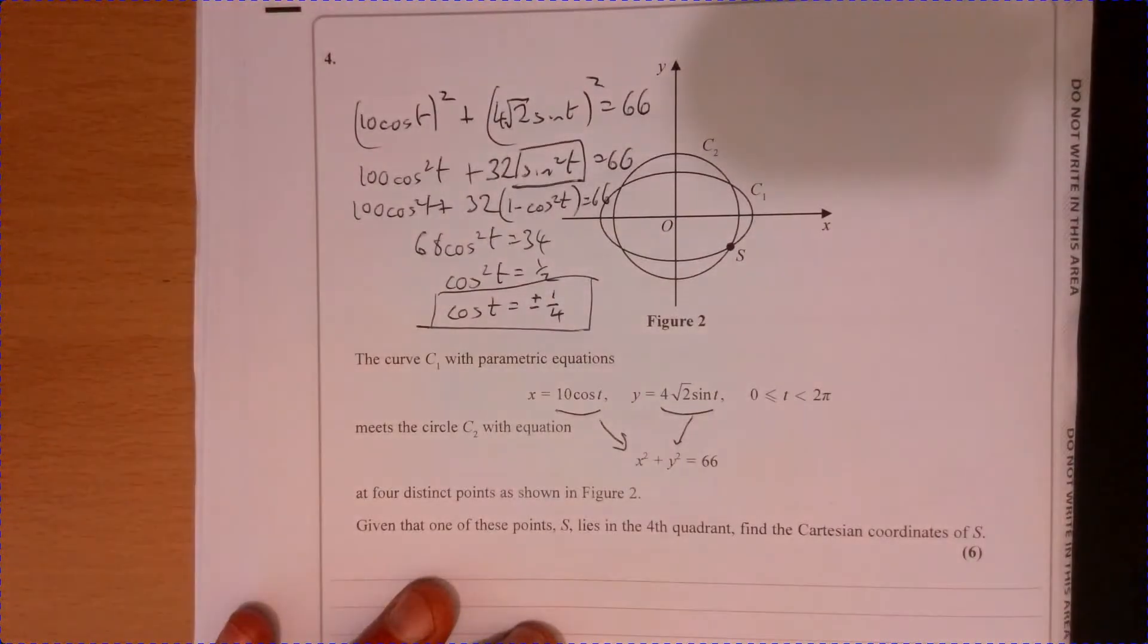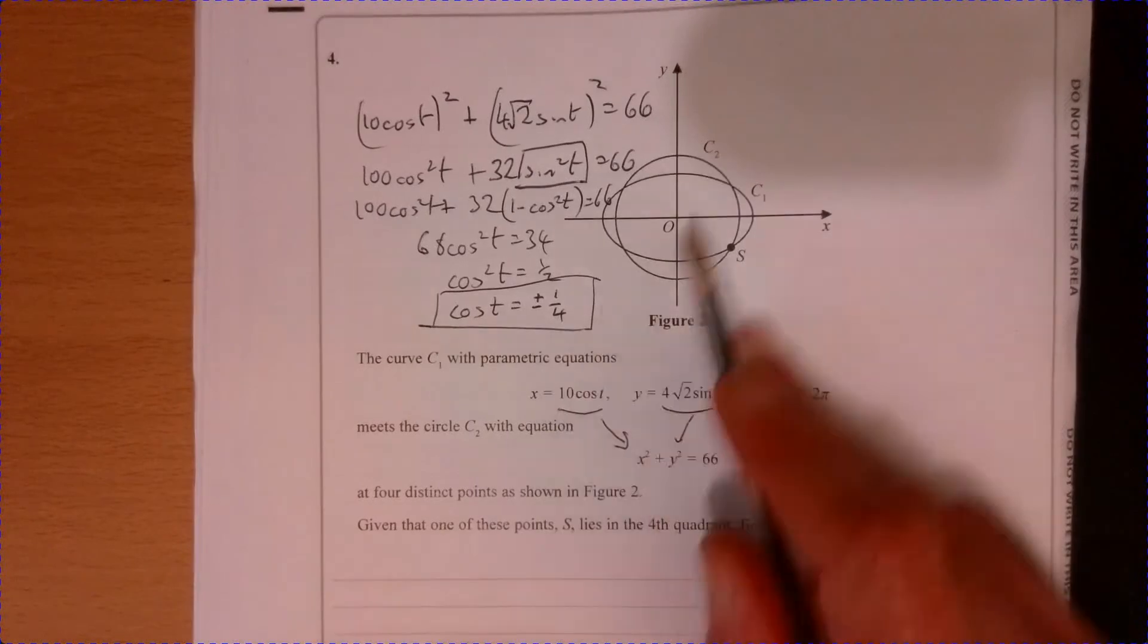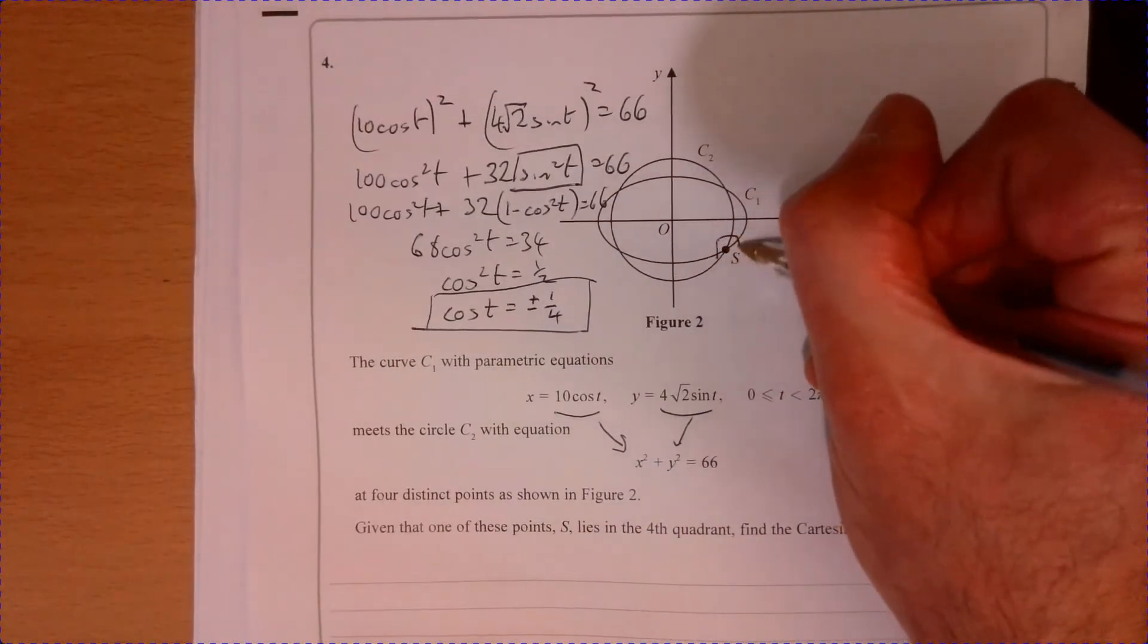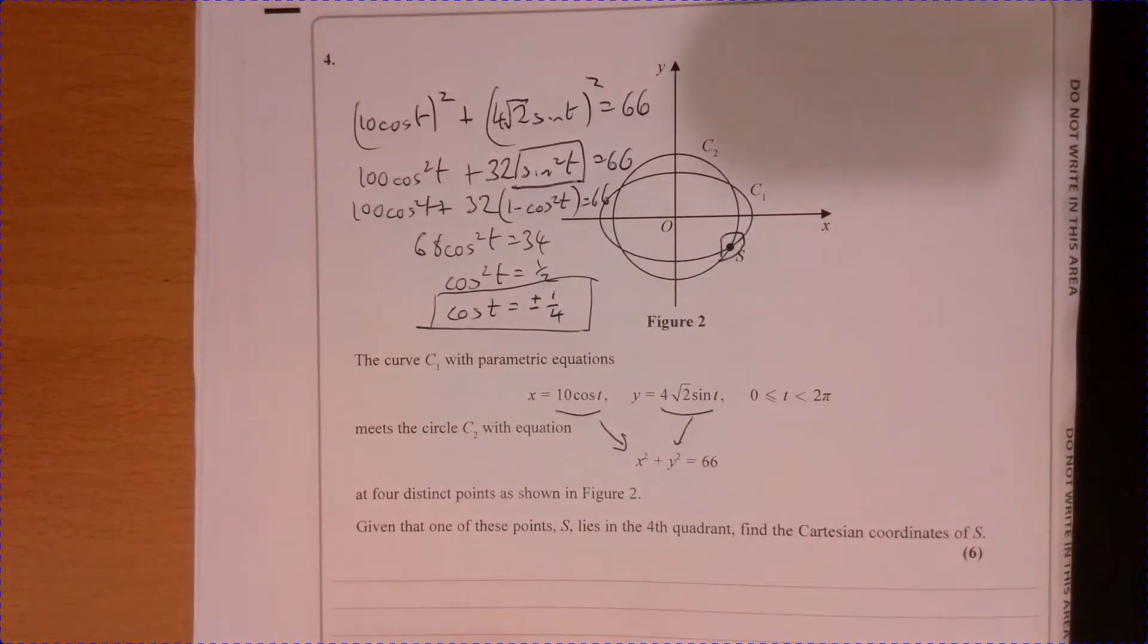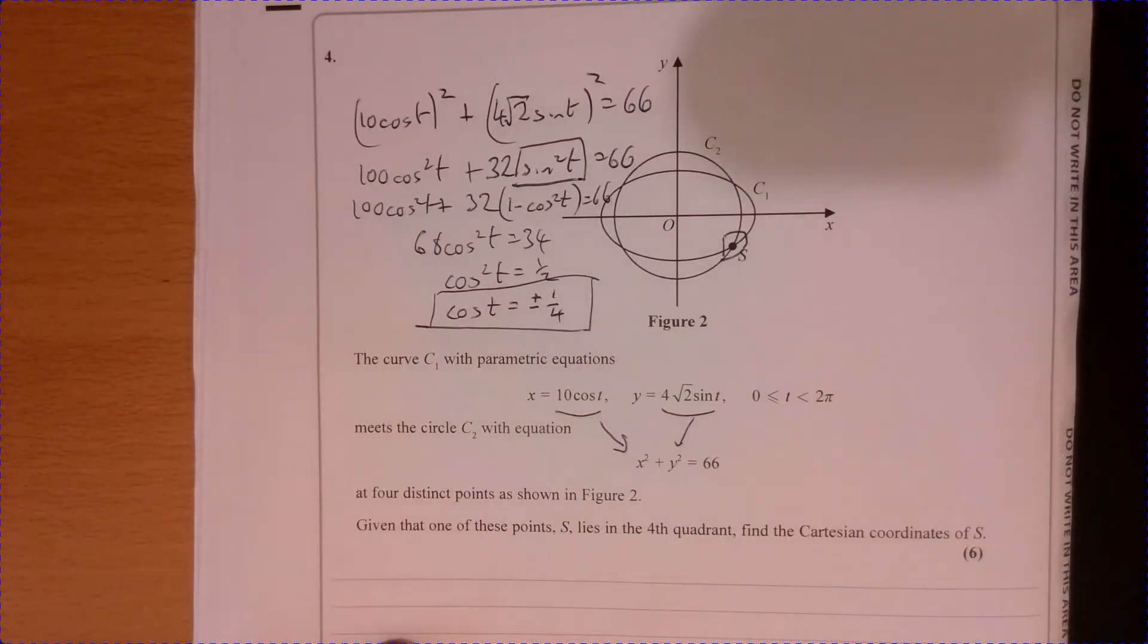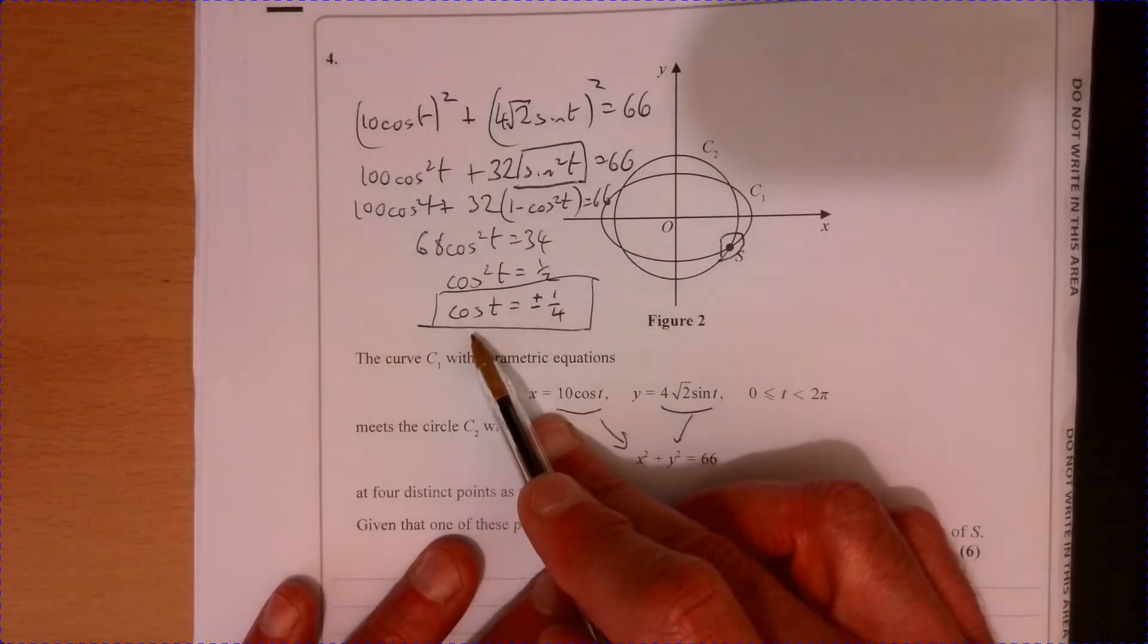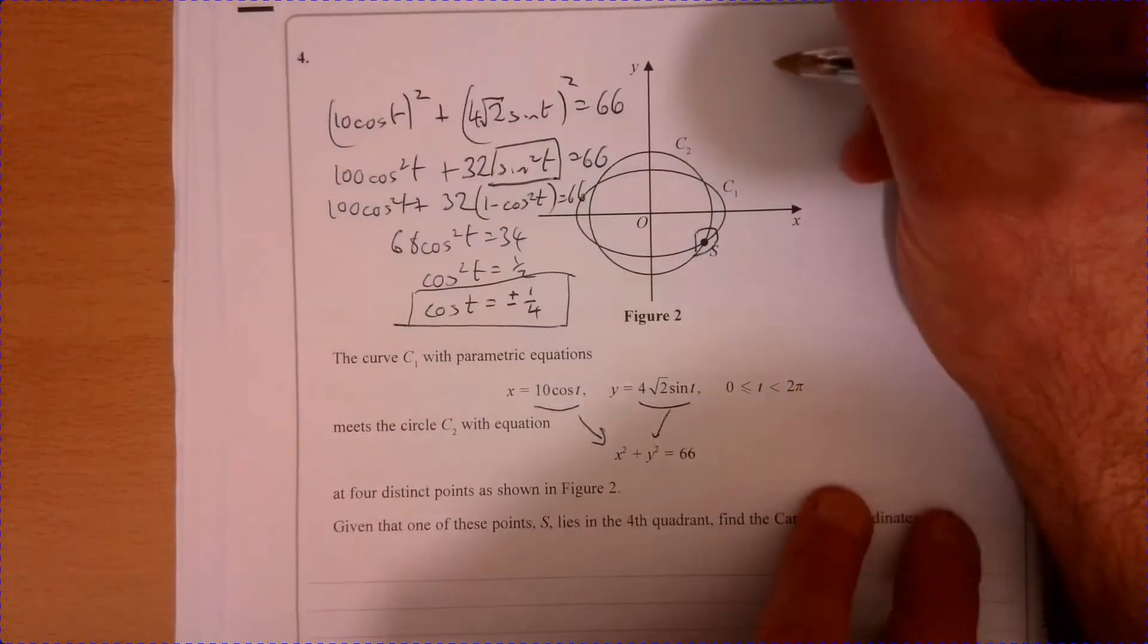Right, okay. Well, we're nearly there. So now what we're actually after, we're after this particular point down here. So I might need to consider kind of both values of T just to think about what's going on. Well, first of all, let's consider the positive value of T.